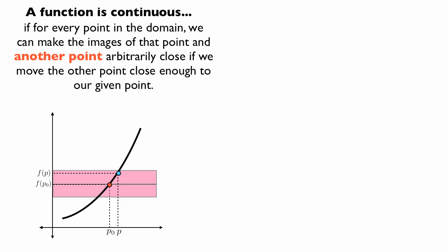The images are going to be within a certain distance of each other, and that distance is going to be called epsilon. A function is continuous if we can always find a delta — a distance such that if p is within delta of p0, in other words, if p is close enough to p0 by delta, then we know that the images f of p and f of p0 are within epsilon of each other.